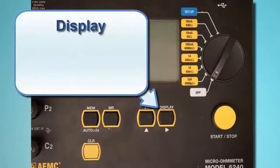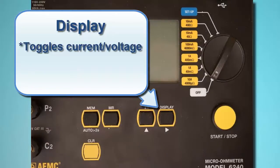Display toggles between displaying current measurements and voltage measurements. This button also functions as a right arrow in user configurable screens.